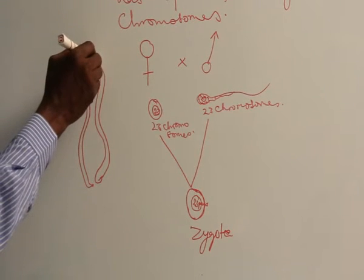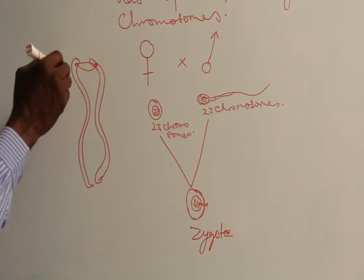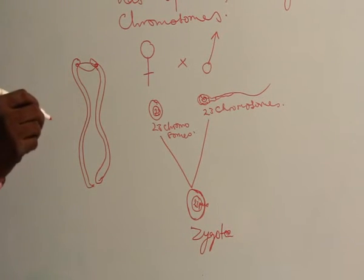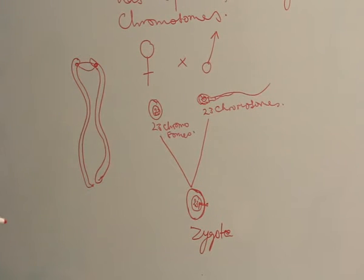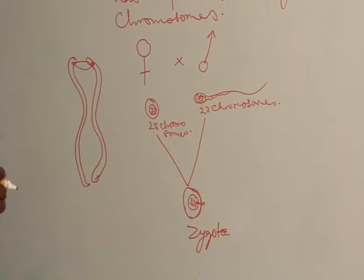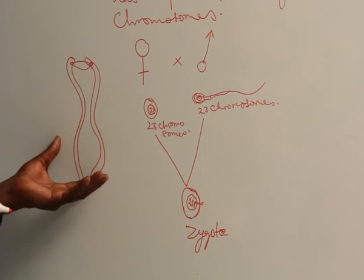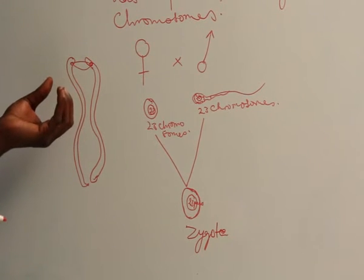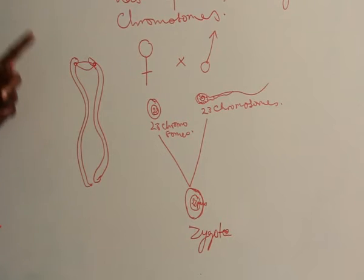And these genes, when we come to genetics, they are the carrier of the characters that will transfer to the offspring. Now, homologous chromosomes are pairs of chromosomes that carry genes for traits located in the same loci.